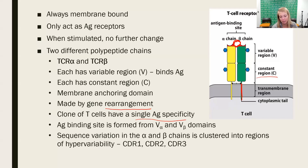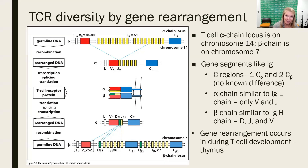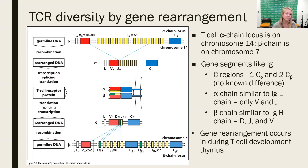So the structure is very similar — two chains, but this time alpha beta. We're going to see a very similar gene rearrangement. Those enzymes active in B cells to go through somatic recombination are also active in T cells, so the images are going to look very similar.